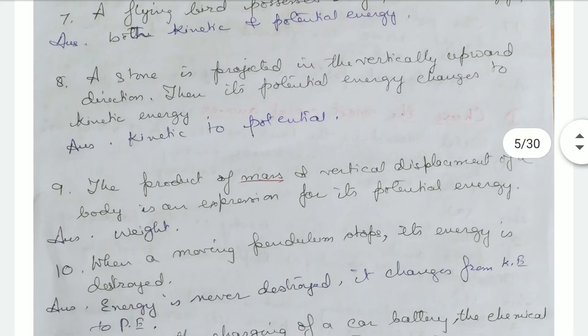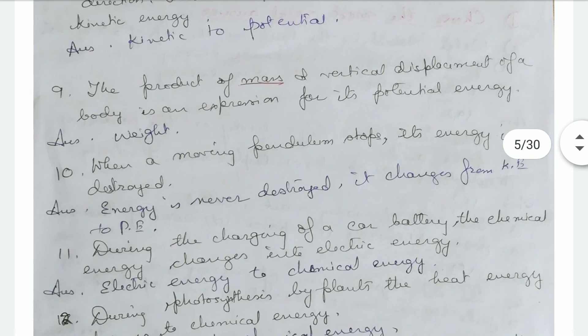A stone projected vertically upward has its potential energy changing to kinetic energy — correction: when moving upward, its kinetic energy is converted to potential energy. At maximum height, kinetic energy is totally converted into potential energy. The product of mass and vertical displacement is an expression for potential energy — correction: it is the product of weight, not mass, and vertical displacement.